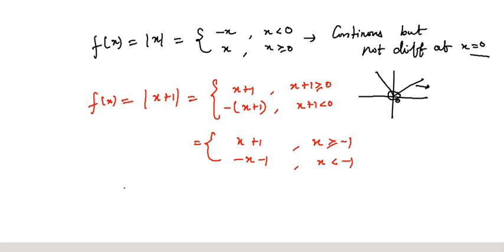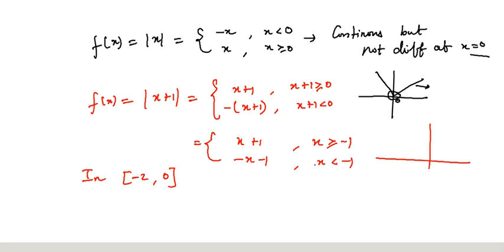Given the interval (-2, 0), by using these two functions, try to draw the graph. By using the shifting property of the function, you can draw |x+1|.